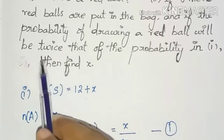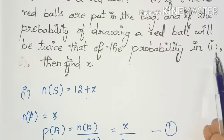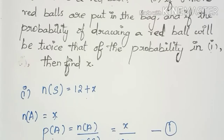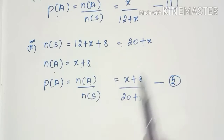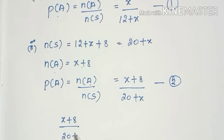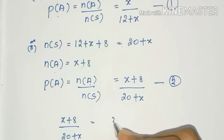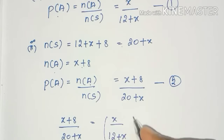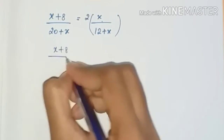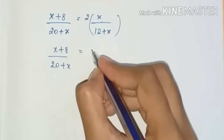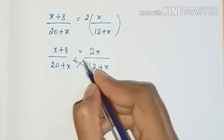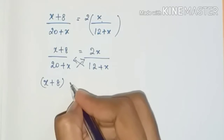Since the probability of drawing a red ball is twice that of part one, we set up: (x + 8) divided by (20 + x) equals 2 times x divided by (12 + x). Cross-multiplying: (x + 8) into (12 + x) equals 2x into (20 + x).